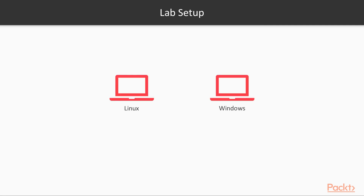Now if we talk about the lab setup, it is very simple. We have two machines available — one is Kali Linux and the second is a Windows machine — and with the help of these machines we are going to perform forensics investigations.